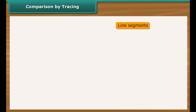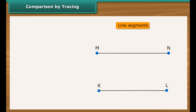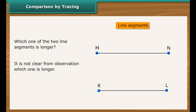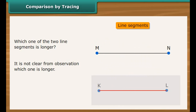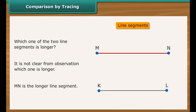Comparison by tracing: Look at the two line segments MN and KL. Which one of the two line segments is longer? It is not clear from observation which one is longer. Therefore, trace KL on a tracing paper and place it on MN. It is clear that KL is smaller than MN. Hence MN is the longer line segment.